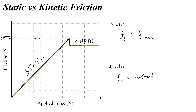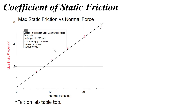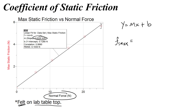Let's take a look at a graph of maximum static friction versus normal force. Here we have a graph of maximum static friction versus normal force for a friction sled with a felt bottom on a lab tabletop. You'll notice that there is a linear relationship between the maximum static friction and the normal force. So using y equals mx plus b, instead of y we have maximum static friction FSmax, and instead of x we have normal force, written as N.